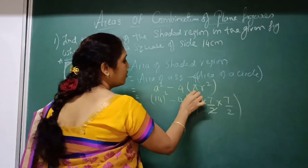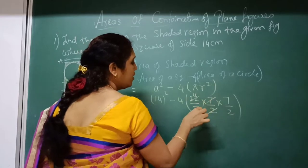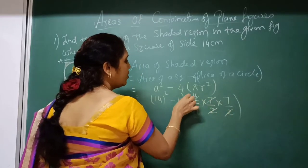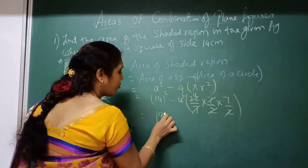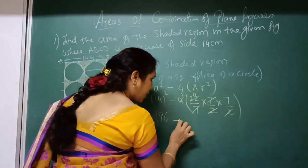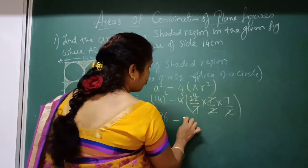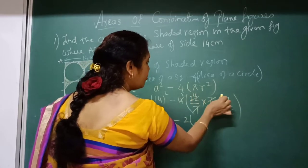So let's cancel. 2 11's are 22, 7's cancel. 2 1's are 2, 2's are 4. So 14 square is 196 minus 2 into 11 into 7.